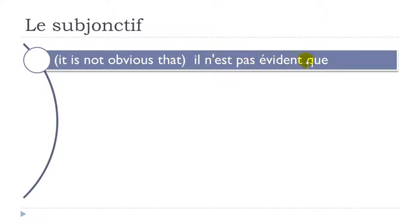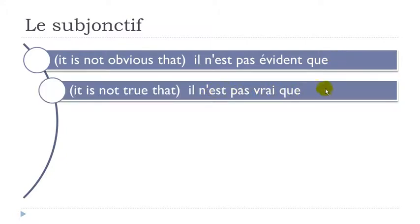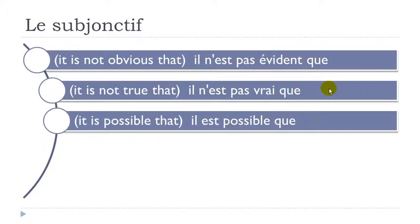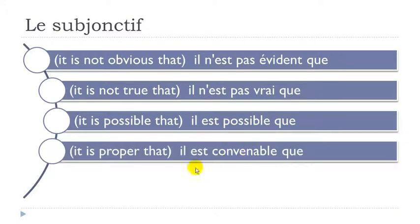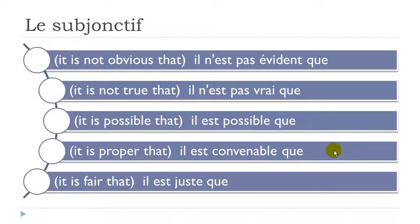Continuing: il n'est pas évident que, il n'est pas vrai que, il est possible que, il est convenable que, il est juste que. All these expressions will be followed by le subjonctif.